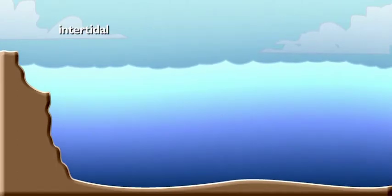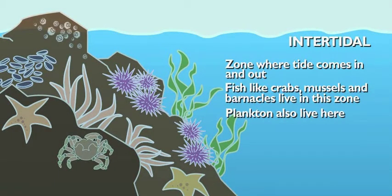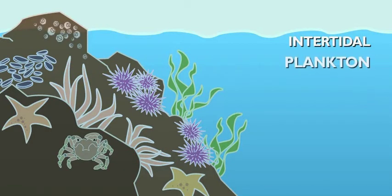The shallow end is the intertidal. This is where the tide comes in and out, and is the top part of the water. Crabs, mussels, and barnacles live in this zone. So do plankton.